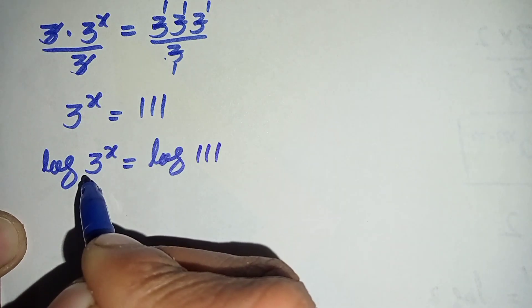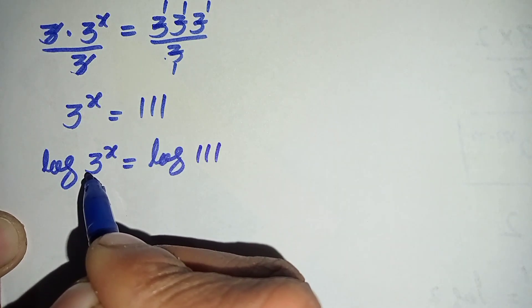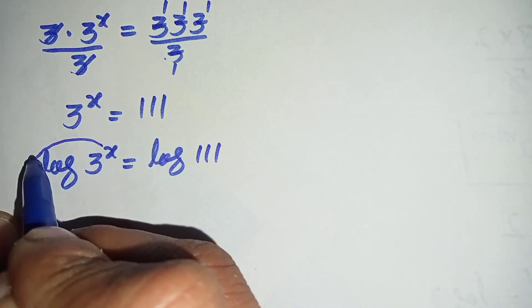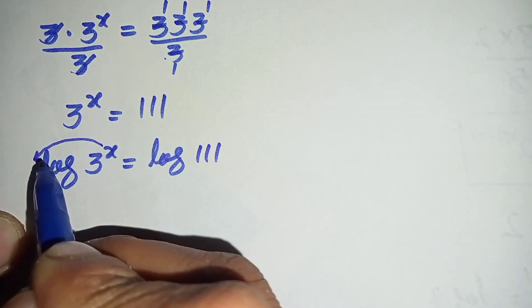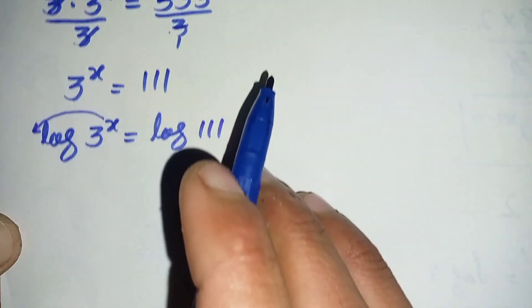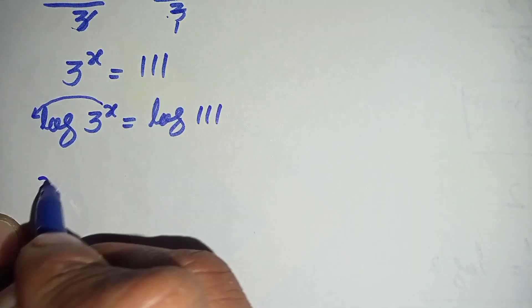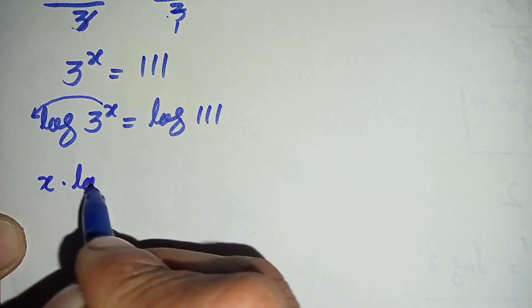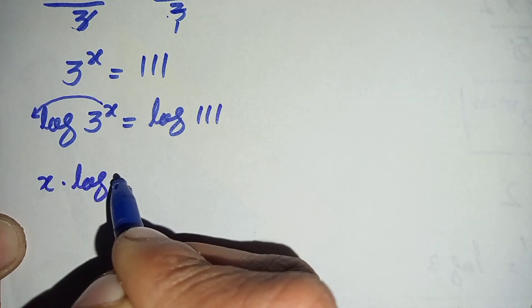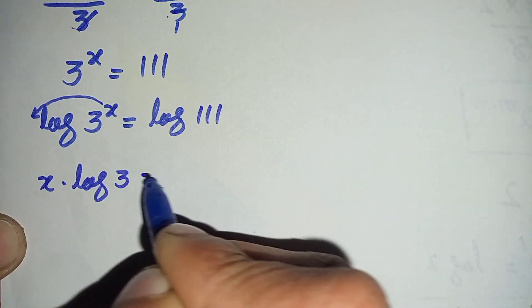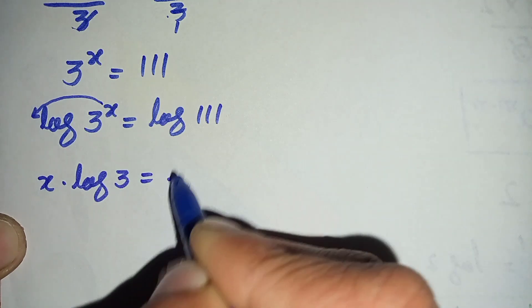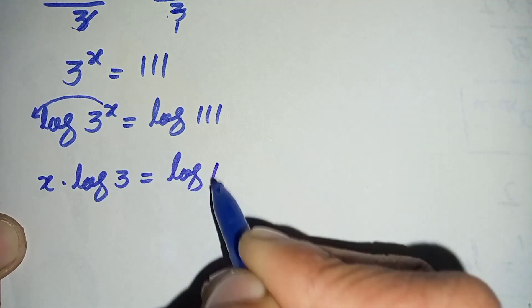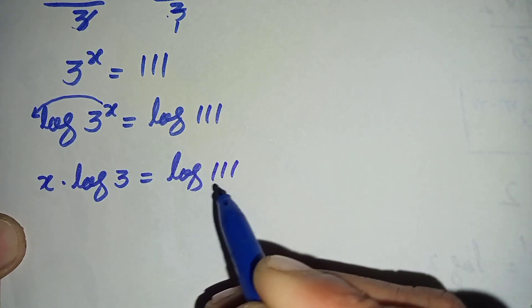Now here we will use a log property and shift this power x to the front of the log. So this will become x times log of 3 is equal to log of 111.